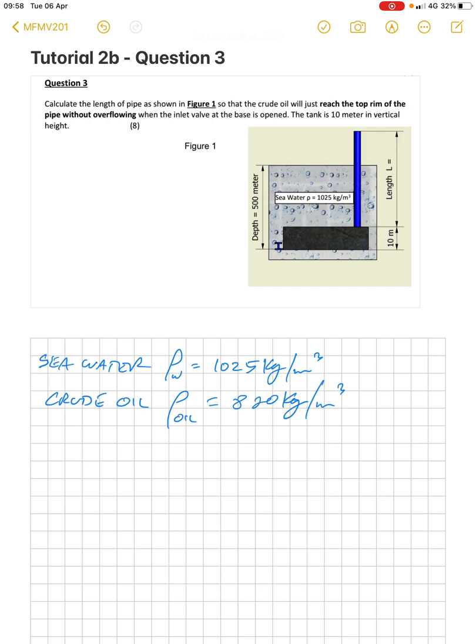There's an inlet valve at the base of the tank. The tank is 10 meters vertical height. We're given seawater density 1025 kilograms per cubic meter, crude oil inside the tank, that density is 820 kilograms per cubic meter.